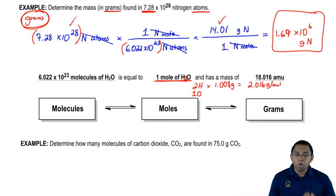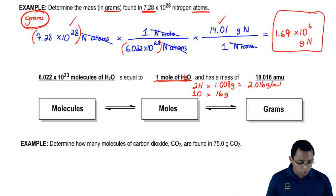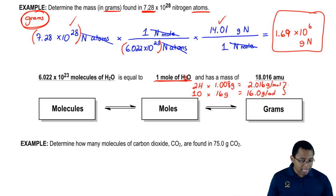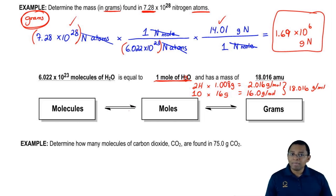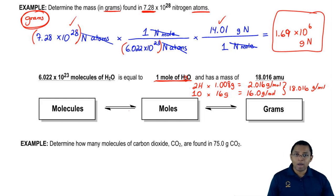Also we have one oxygen, which weighs 16 grams according to our periodic table, so that's 16 grams per mole. When you add those two numbers up together, that gives you 18.016 grams per mole, or 18.016 atomic mass units. So that's where that number came from — we looked up each of the atomic masses of each individual element and then added them up together to get our answer.